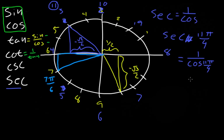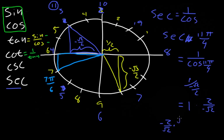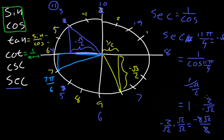The x value here is negative √2/2. So this is 1 over negative √2/2, which we flip to get 1 times 2 over negative √2 — that's 2 over negative √2. Since the teacher doesn't like the radical on the bottom, we multiply by √2/√2. This gives negative 2√2 over 2 — the 2's cancel — and the answer is negative √2. That's it, you're done.